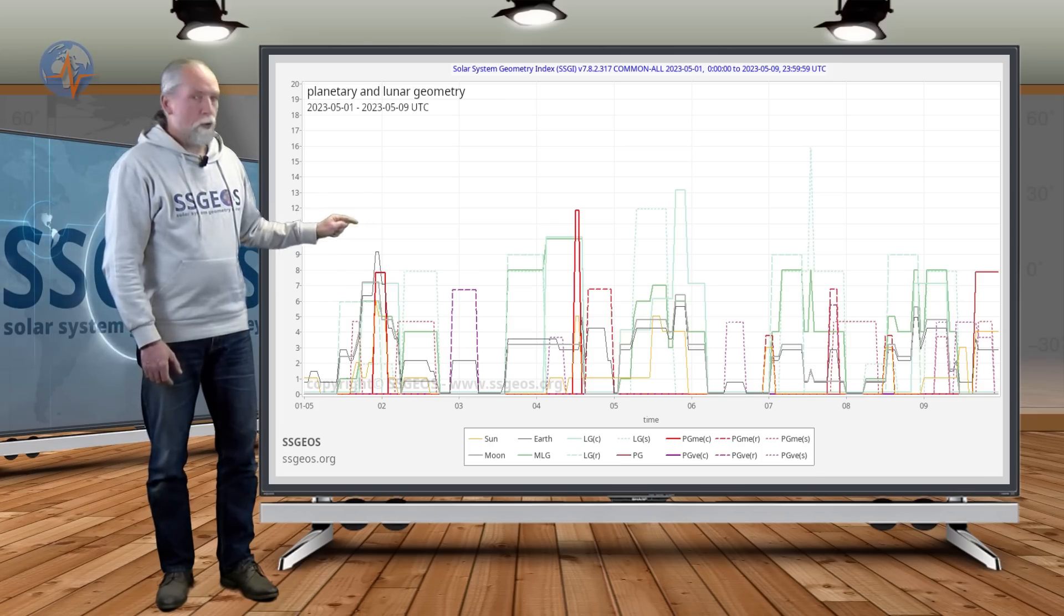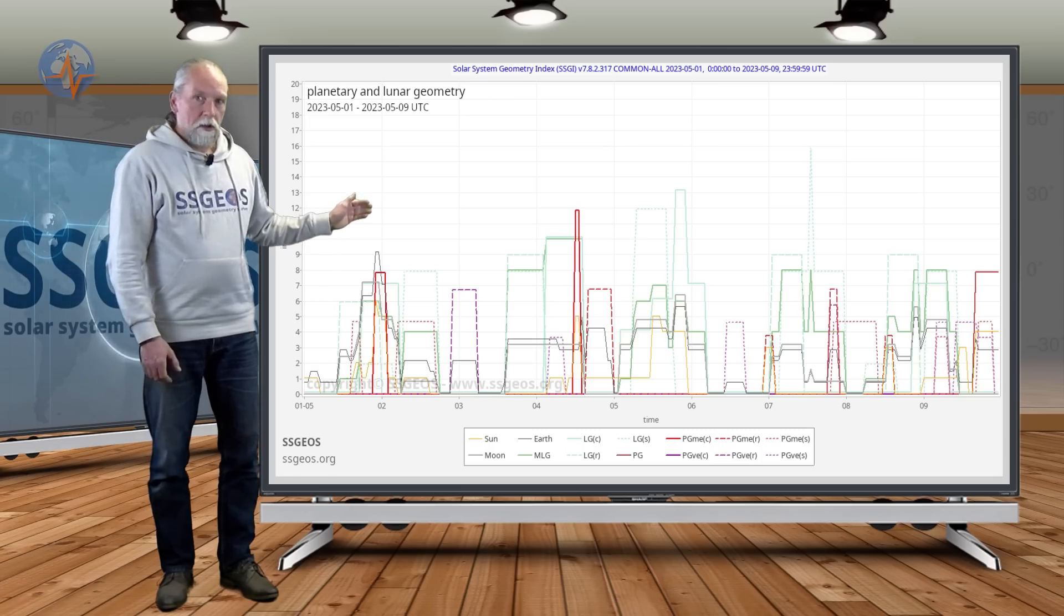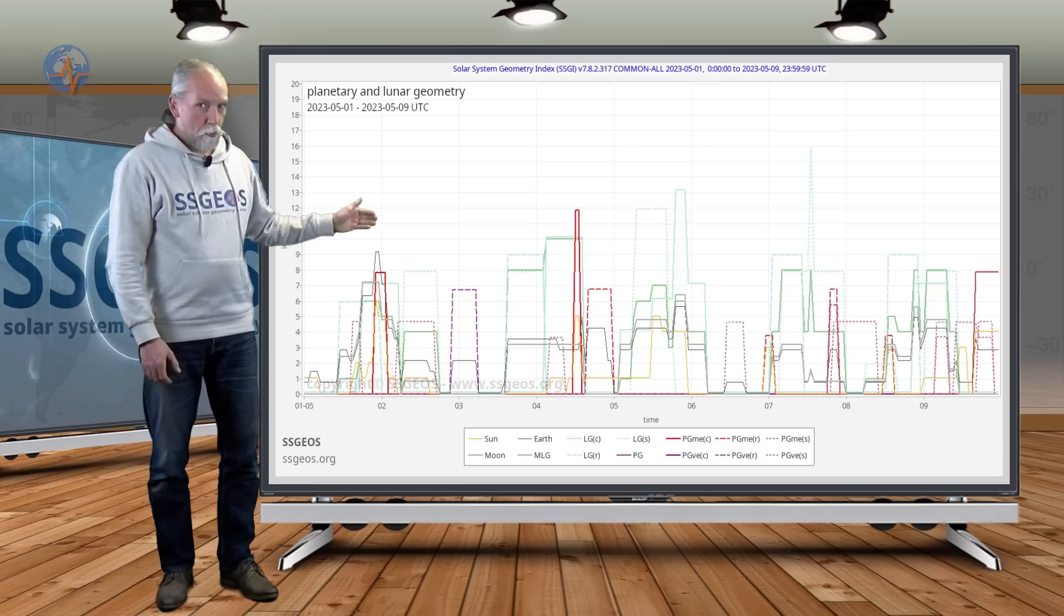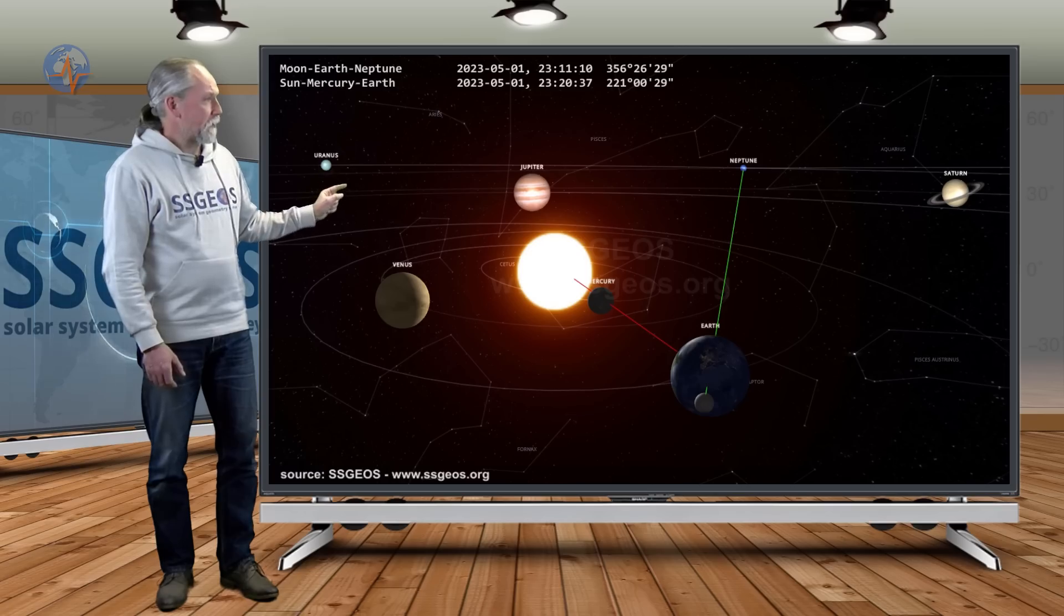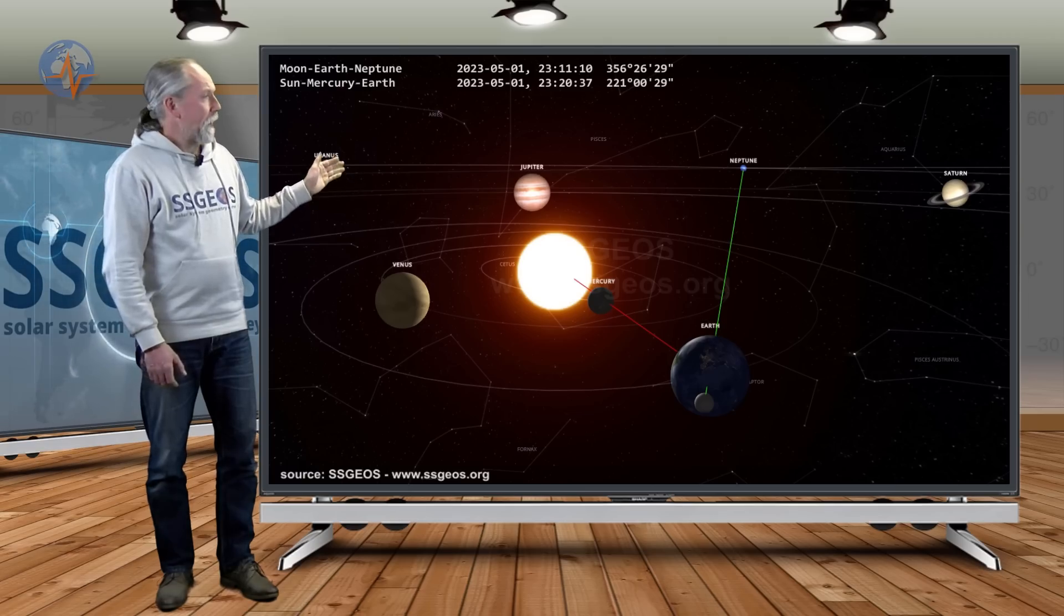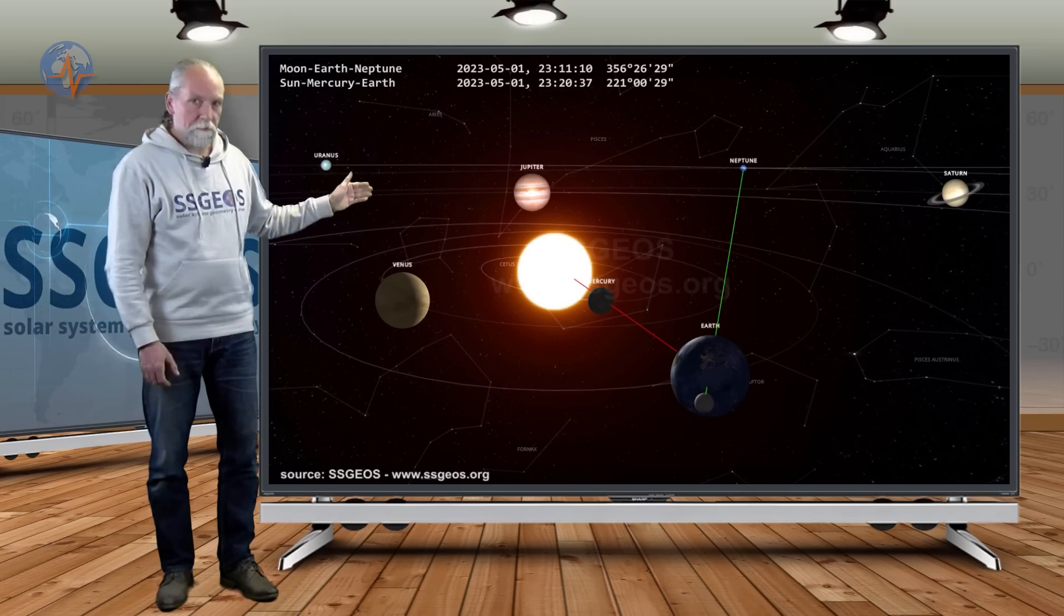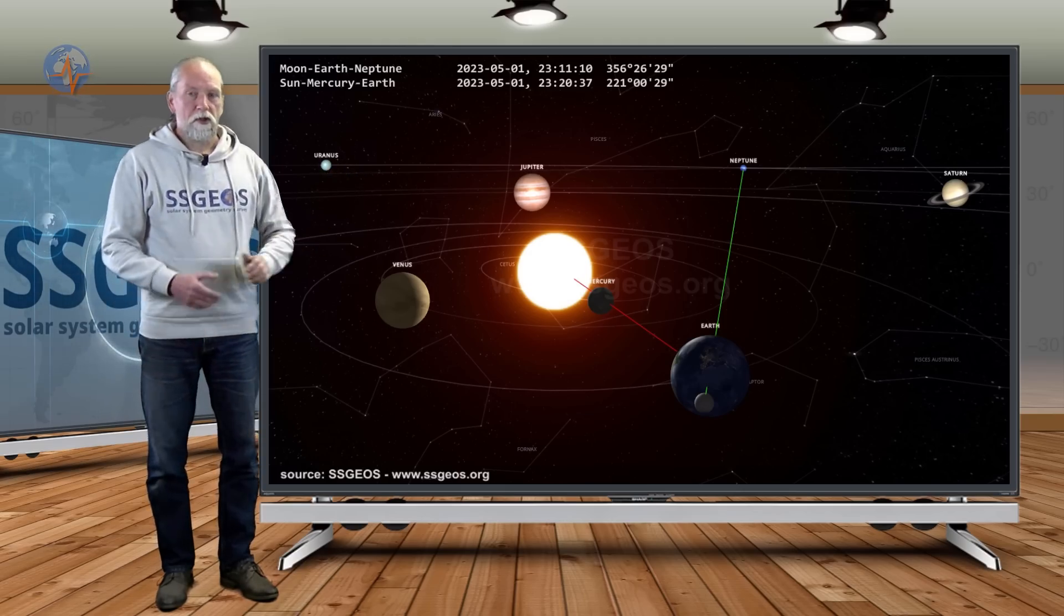Yesterday night we had a small convergence of planetary and lunar geometry, and we will have a similar convergence on the 4th. If we look at the solar system, we see that yesterday night, late night, we had Moon, Earth, and Neptune in a conjunction.